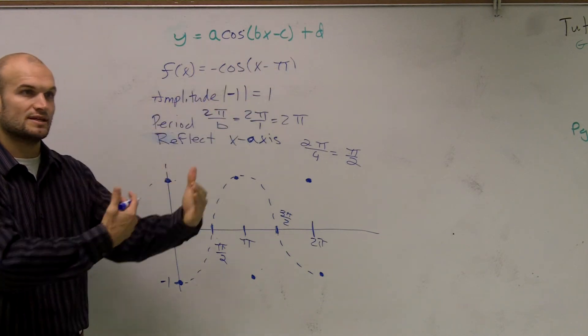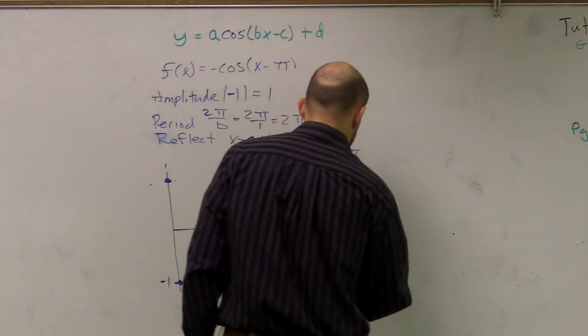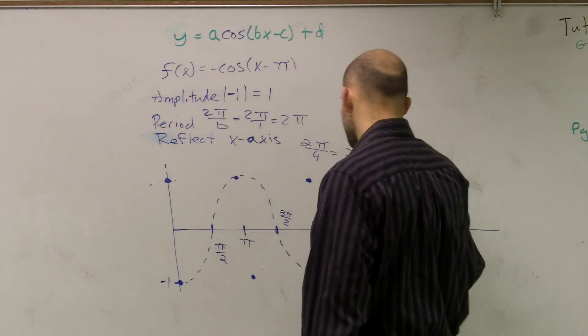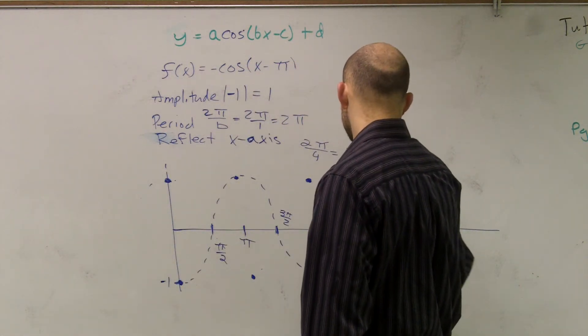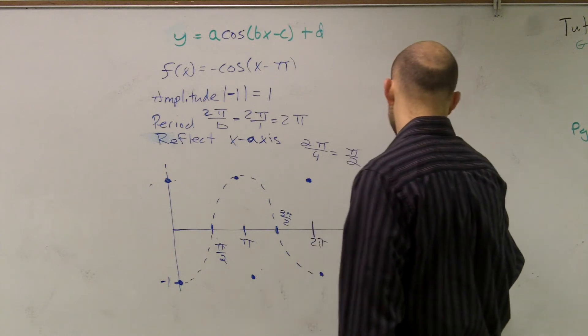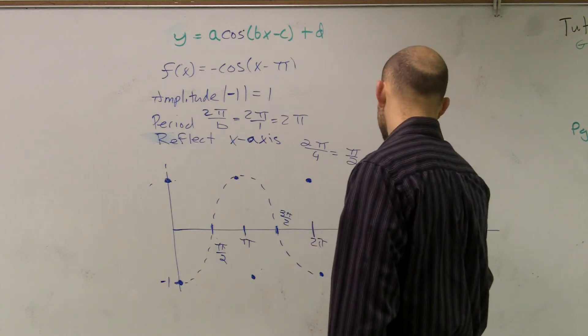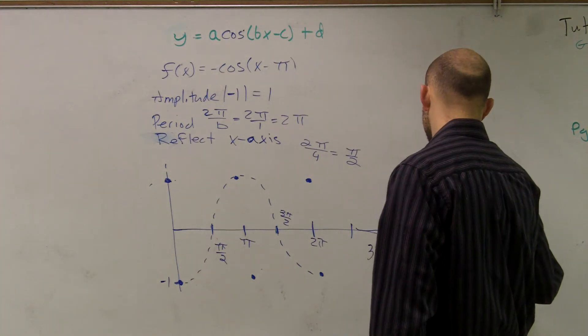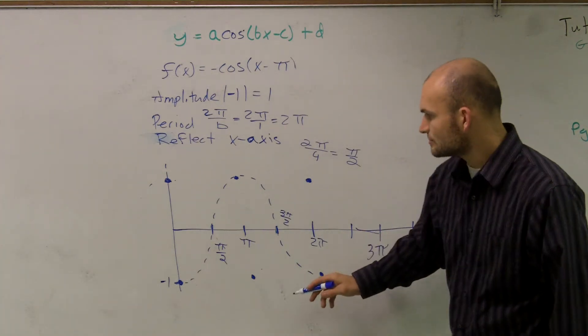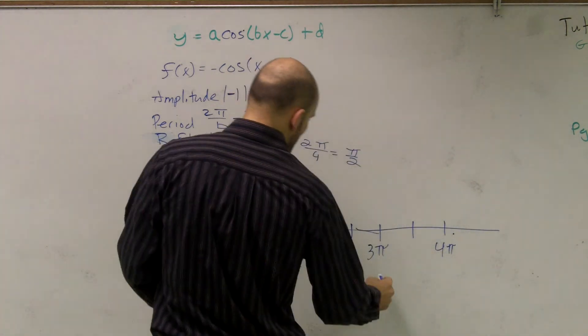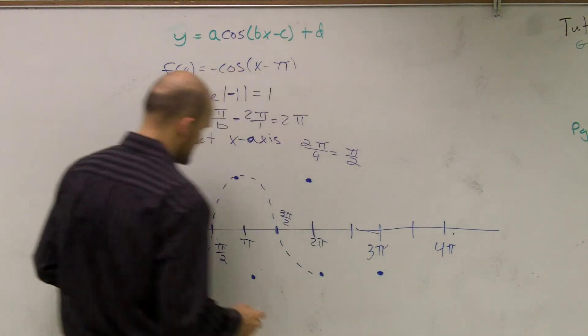So we're shifting the whole graph. So as I continue, this would be 3π, that's 4π. So essentially all I'm doing is I'm taking these points and I'm moving them over π units.